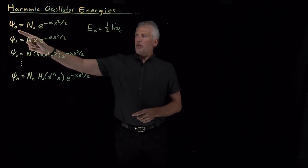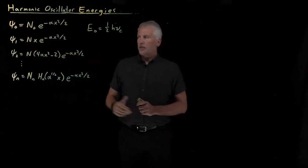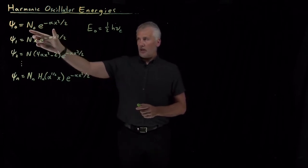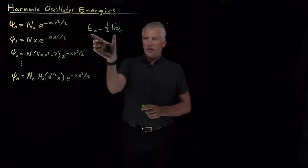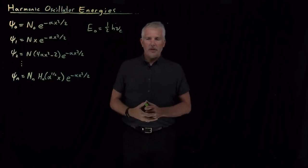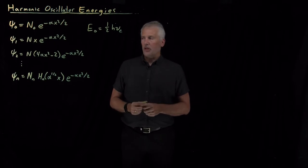We've seen in particular that for the ground state wave function, the simplest of these functions with just a constant out in front of the Gaussian, that when we plug that wave function into the Schrodinger equation, the energy turned out to be one-half times h times the vibrational frequency of this oscillator, the harmonic oscillator that we're talking about.